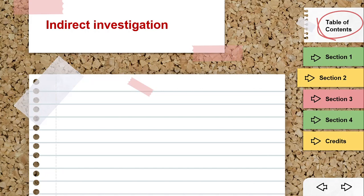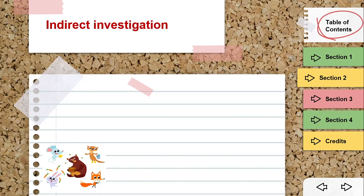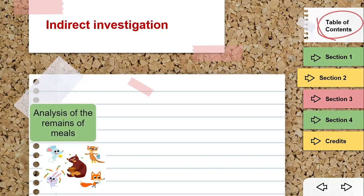We also have another way: indirect investigation. Maybe the animal is dangerous and we cannot get closer to it, like the lion or the tiger. So the scientist cannot make a direct observation — instead, he will make an indirect investigation. For example, the scientist can give an animal a meal and then analyze the remains of that meal.